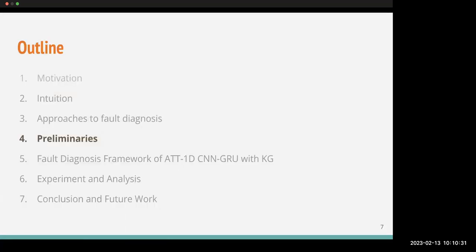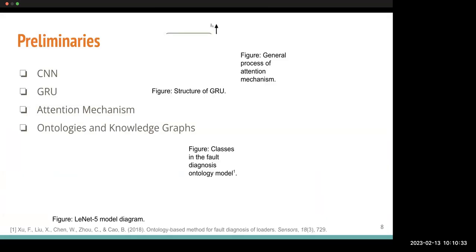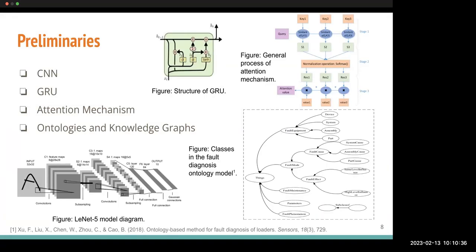Moving to the preliminaries: this research is focused on CNNs, GRUs, attention mechanisms, ontologies, and knowledge graphs. The figure in the bottom right corner shows the classes and the fault diagnosis ontology model example proposed in earlier research. The bottom left corner includes the LeNet-5 model diagram, which is mostly used in computer vision approaches.